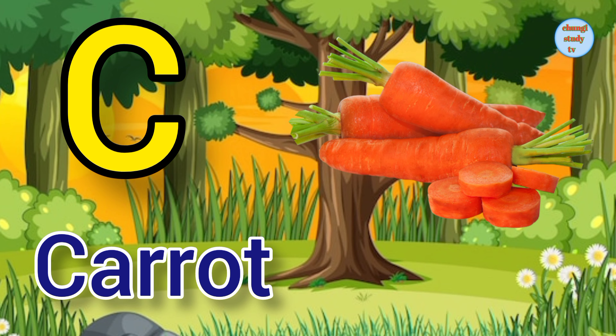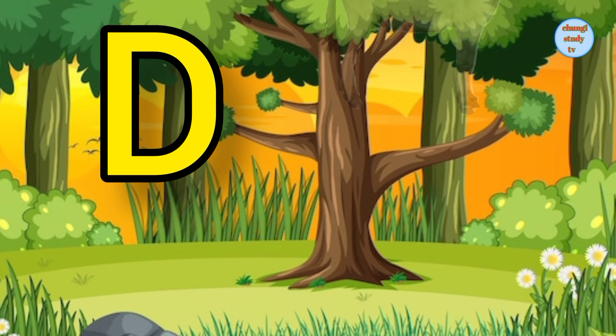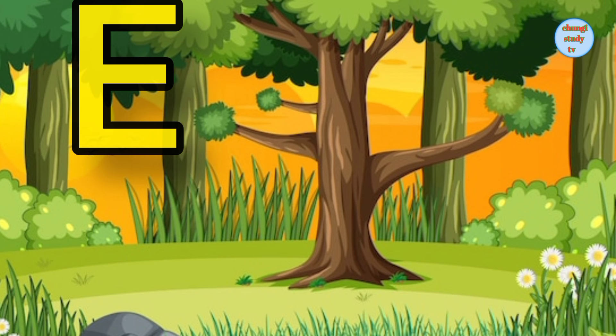C. C for carrot, carrot means gazar. D. D for donkey, donkey means gada.